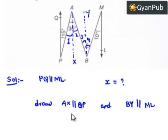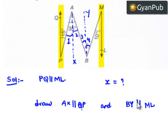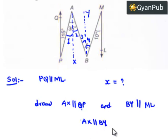As AX is parallel to QP and BY is parallel to ML, and we know that QP is parallel to ML, therefore we can say that AX will also be parallel to BY.